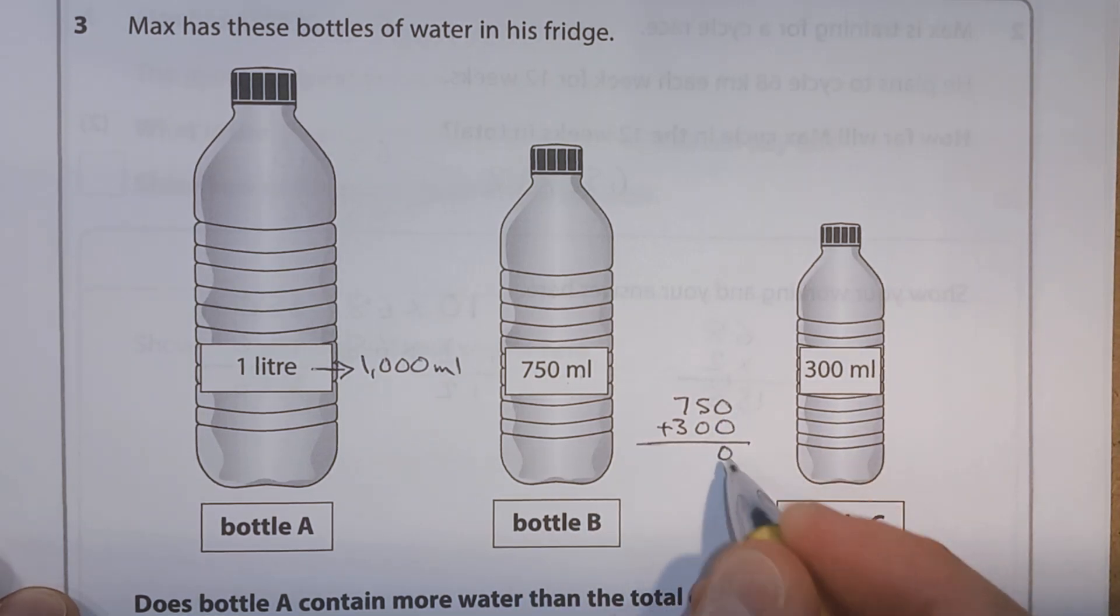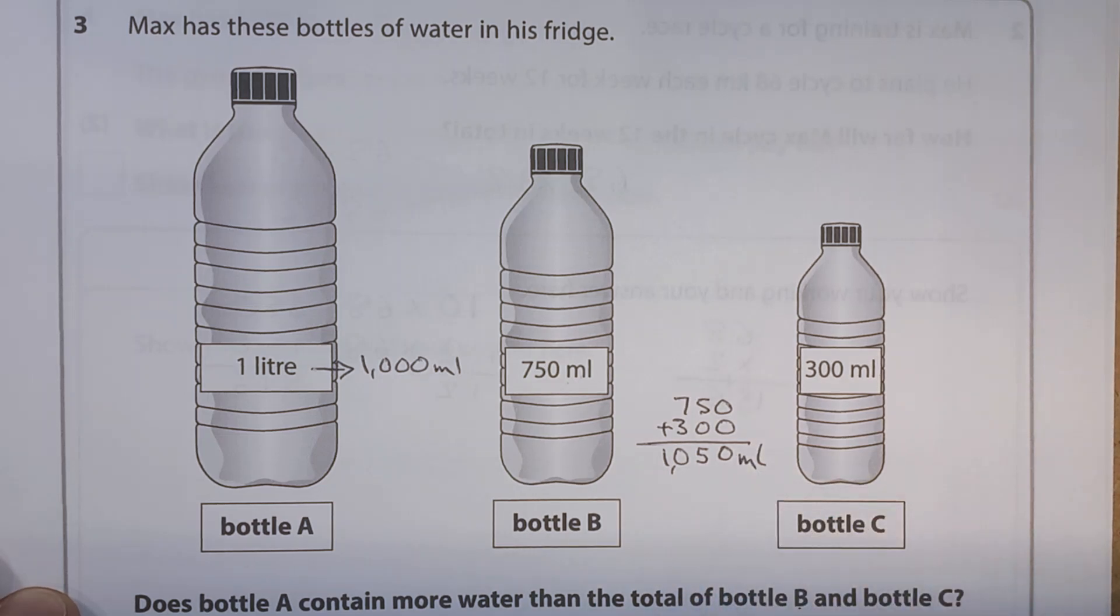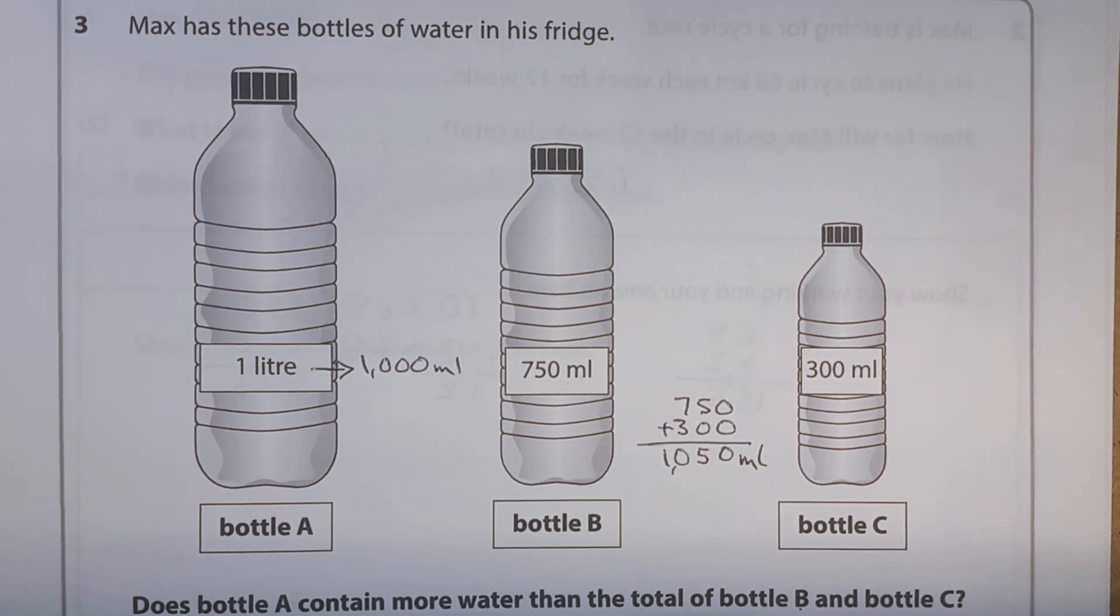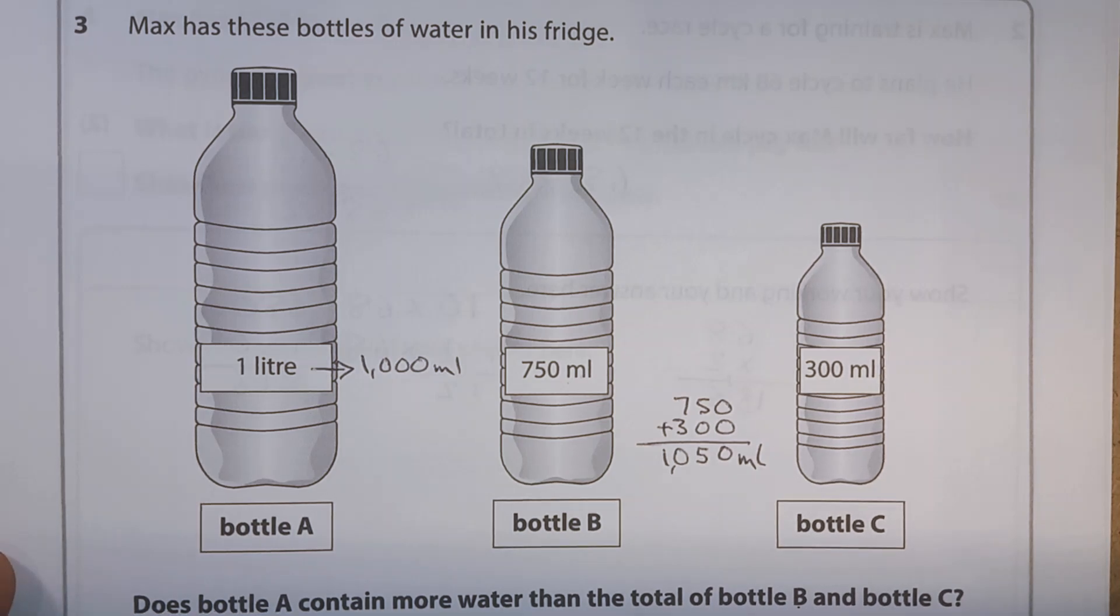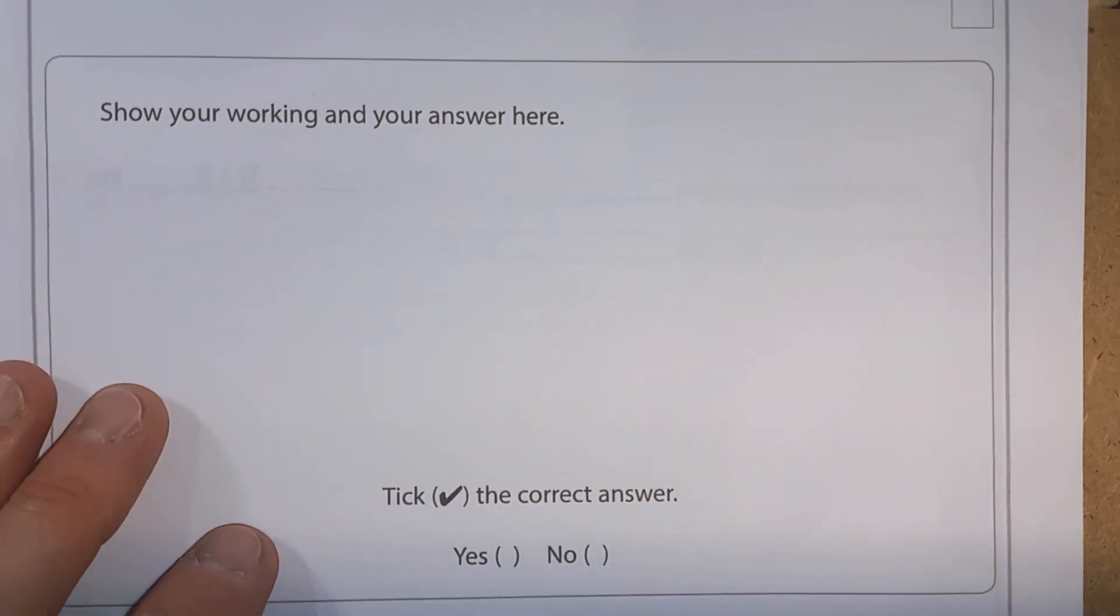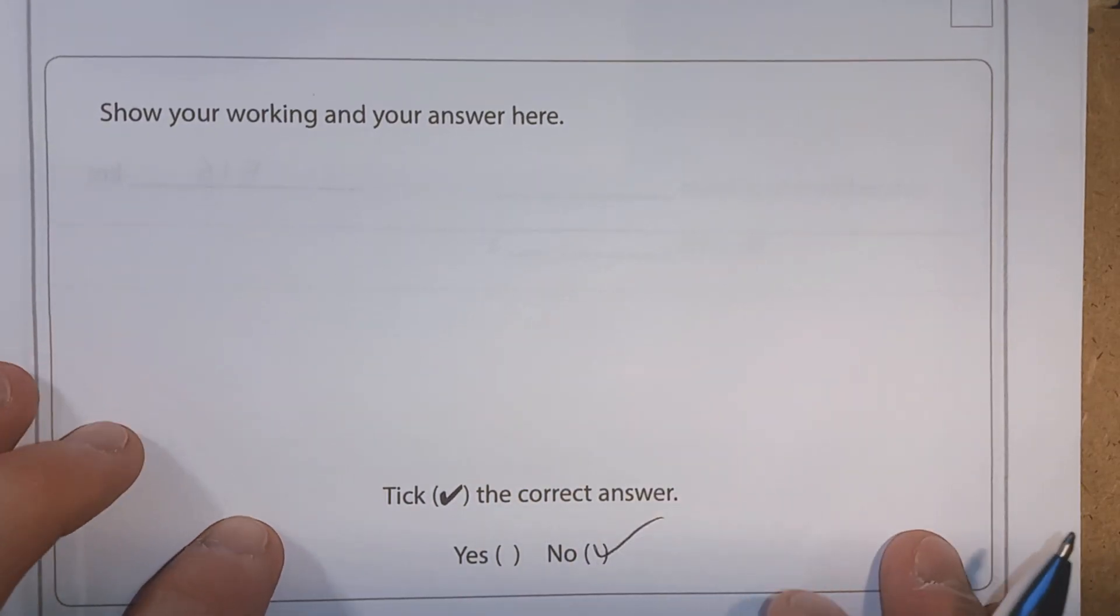Zero plus zero is zero. 5 plus zero is 5. 7 plus 3 is 10. So we've got a total of 1050 milliliters. So does bottle A contain more water than the total of bottle B and C? Well, no, it's less. So we can say no. And we can add 1000 is less than, you can use the words or use the symbol, 1050. And we just want to make sure that we tick no down there as well.